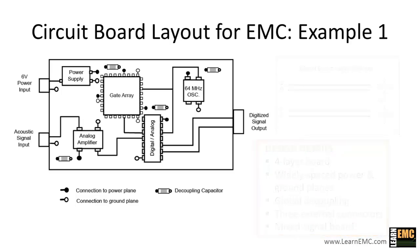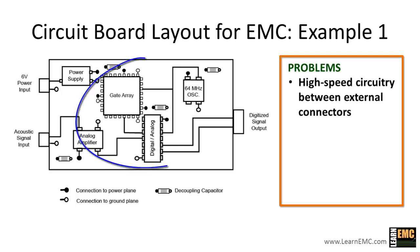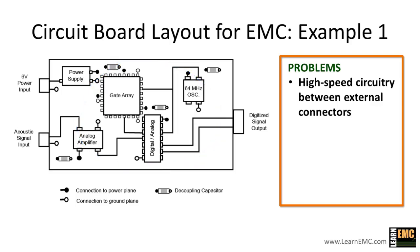Now, with respect to unintended radiation and signal integrity, there are two major problems with this board and also a few minor problems. The first major problem is that high-speed circuitry is located between the external connectors on the board. This can cause cables attached to the connectors to radiate at unacceptable levels. The second major problem is that the decoupling is inadequate for this particular board. Poor decoupling can lead to voltage fluctuations between the power and ground planes as the various devices demand current.